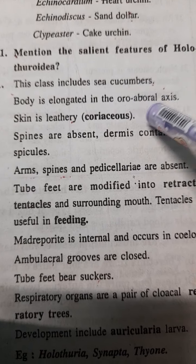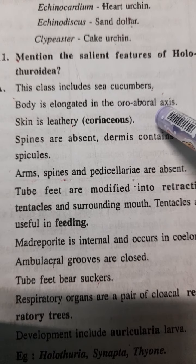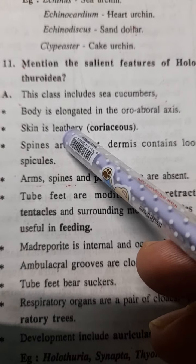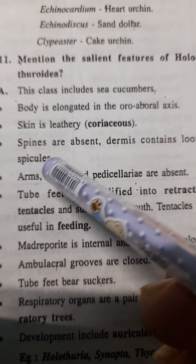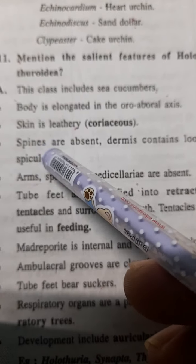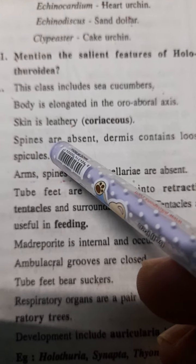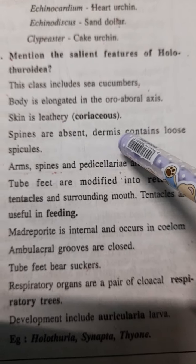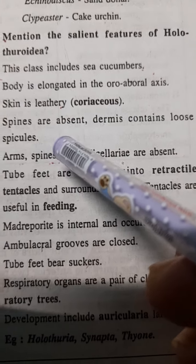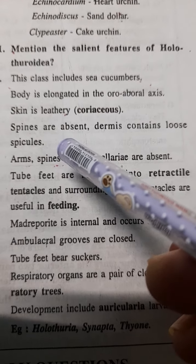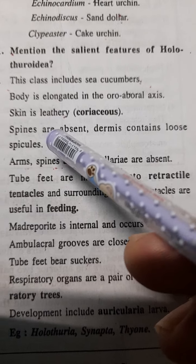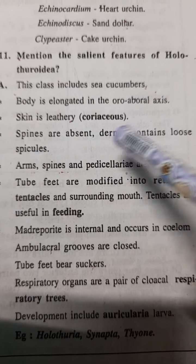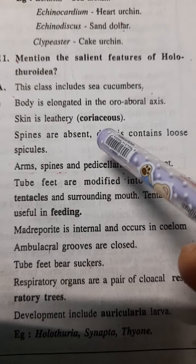The skin is leathery and coriaceous. Spines are absent. The dermis contains loose spicules — so spines are absent but spicules are present in the dermis.